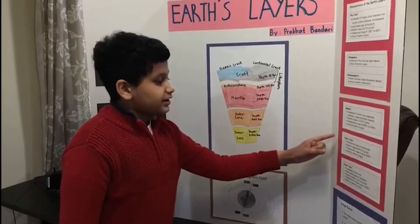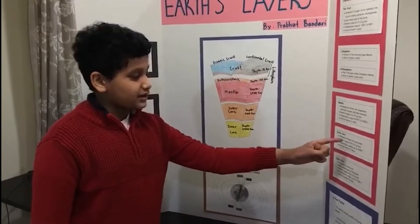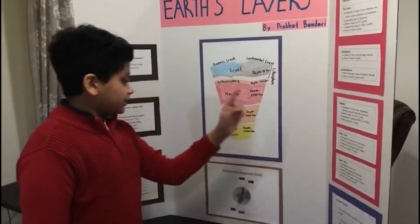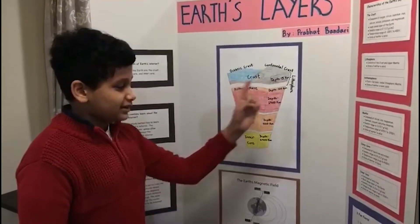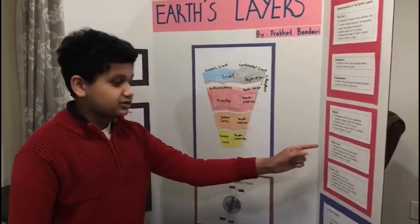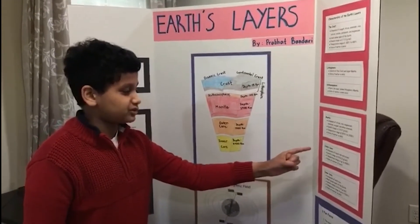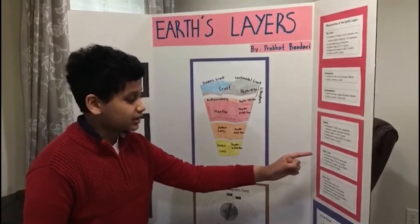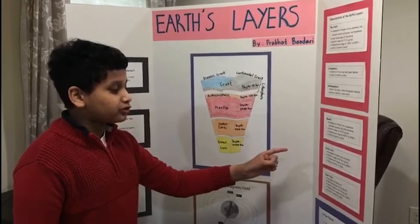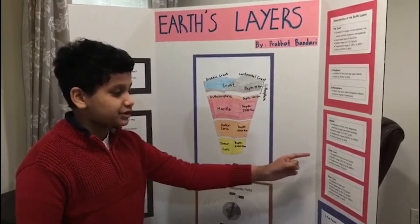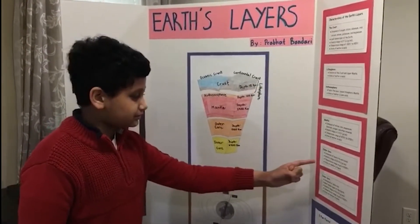The outer core is composed of liquid iron and nickel. It has a depth of 5,100 kilometers and its density range is 9.9 to 12.2 grams per centimeters cubed. Its temperature range is up to 4,300 degrees Celsius and its state of matter is liquid.